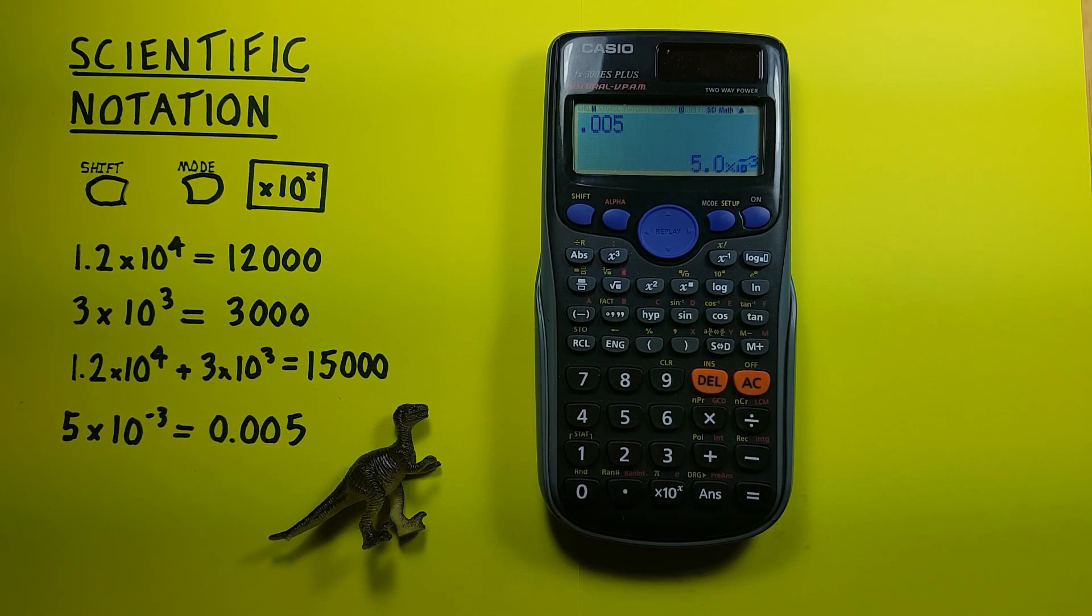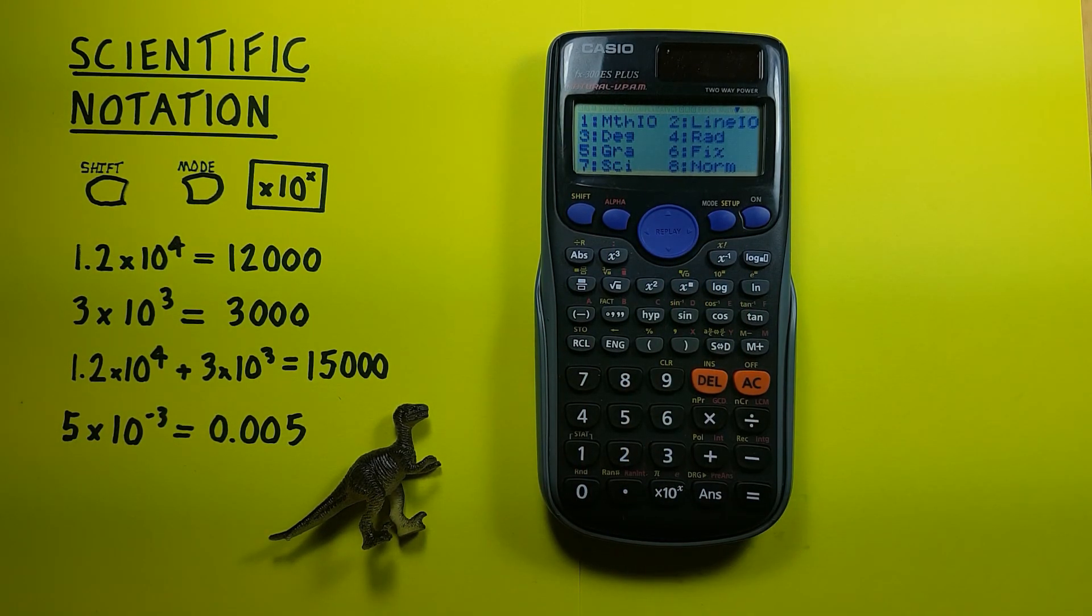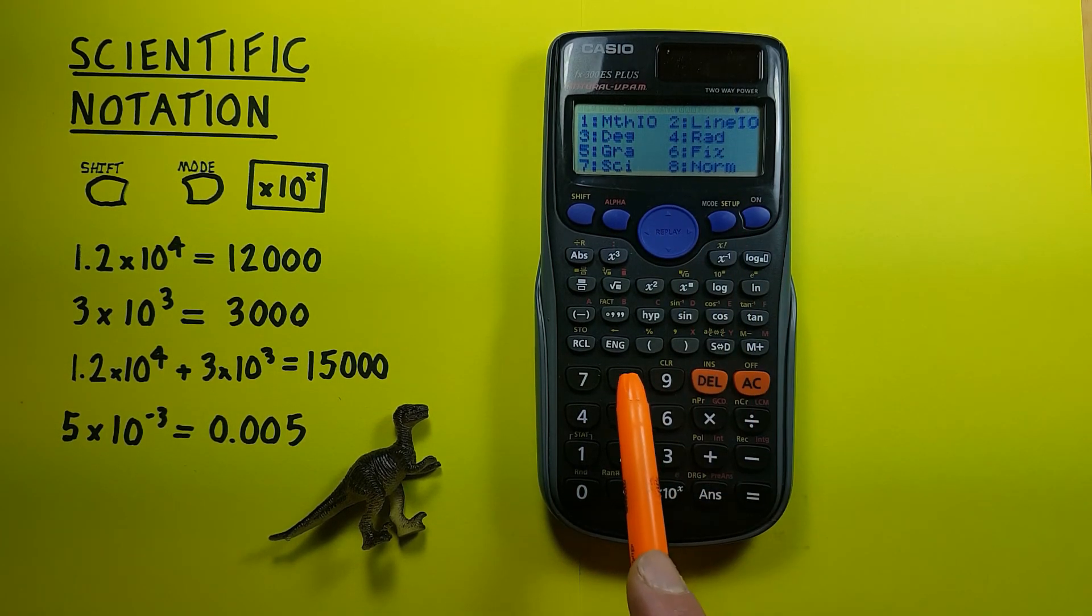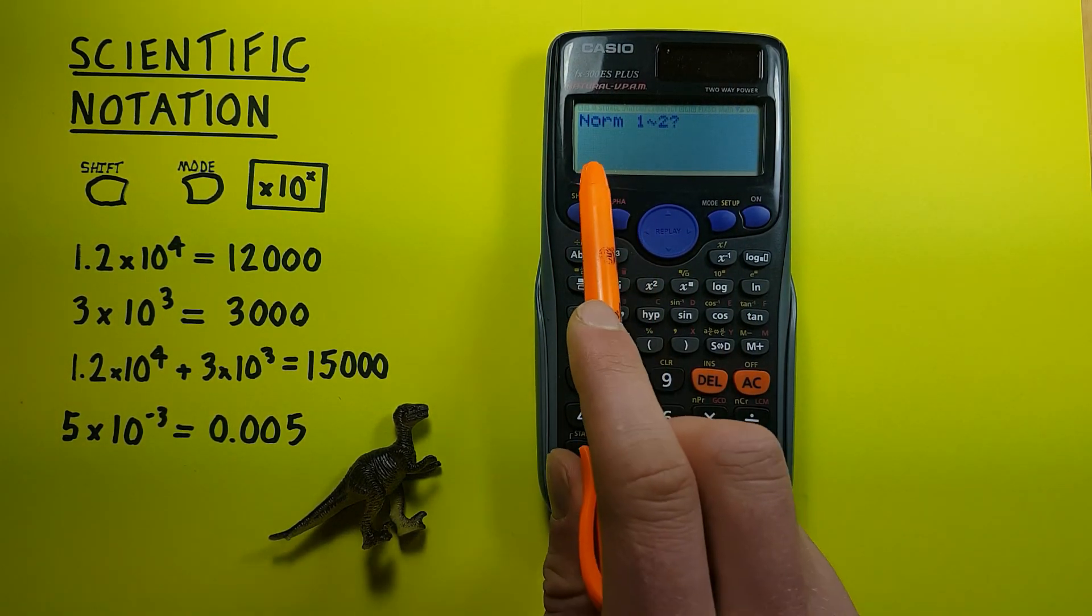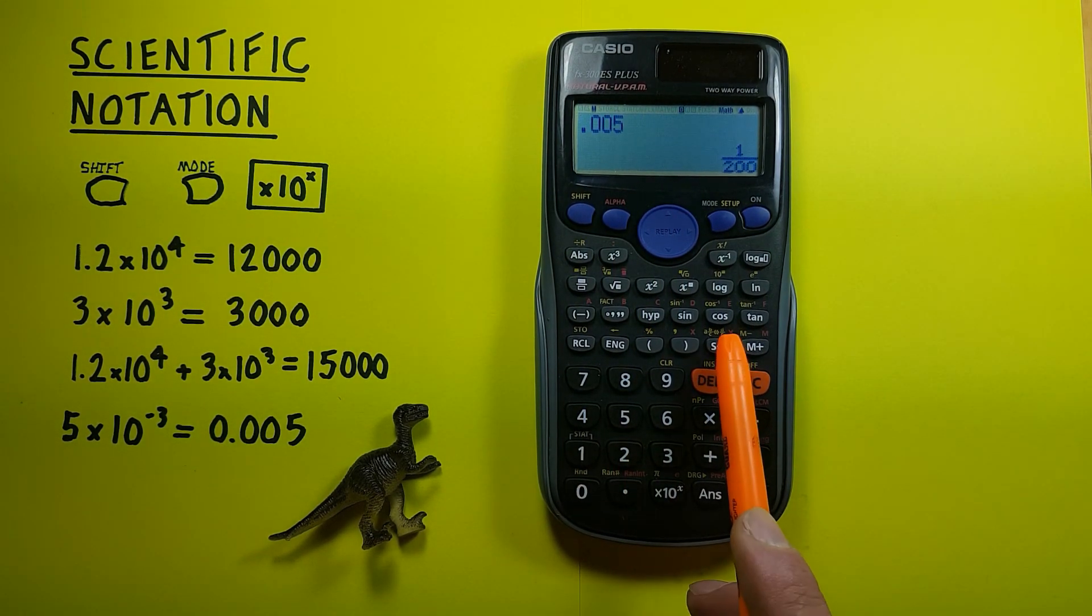And when we're done with this mode, and we want to go back to our normal calculator mode, we can press shift mode again, back to this menu, and we want to choose number 8, normal mode. So 8, and then norm 1 or 2, we want to go with norm 2. And we can see now, we're back to getting decimals.